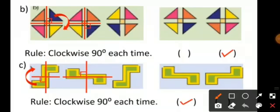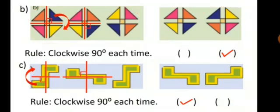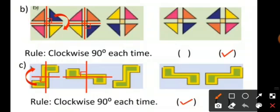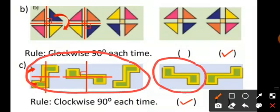Here you can check that this shape is moving by 90 degrees each time, so the fourth position will be like this. The rule of this pattern is clockwise 90 degrees each time. In the next figure, this pattern is also moving by 90 degrees each time, so the fourth pattern will be the first one — clockwise 90 degrees each time.